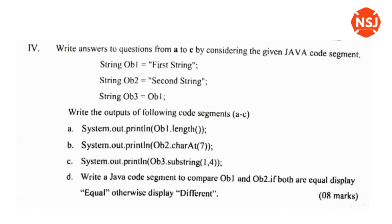Code B: System.out.println(ob2.charAt(7)) — this gives the character at index 7 in the string ob2. Code C: System.out.println(ob3.substring(1, 24)) — if you have a code for object ob3, you can use substring to extract a portion of the string.